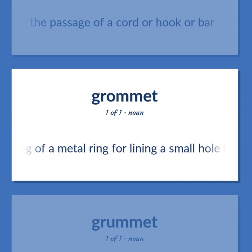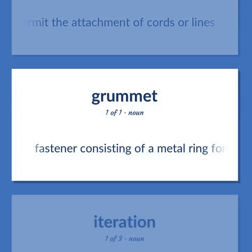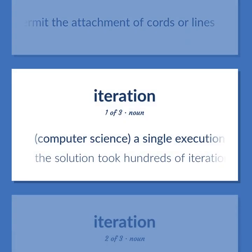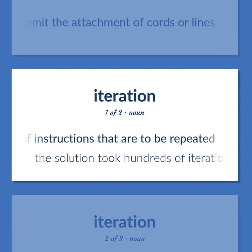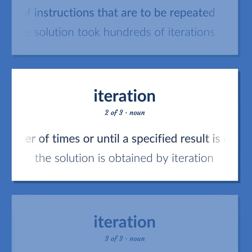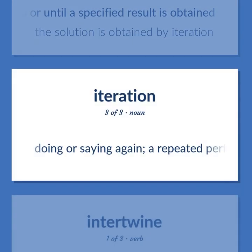ITERATION — Computer Science: A single execution of a set of instructions that are to be repeated — 'The solution took hundreds of iterations.' Computer Science: Executing the same set of instructions a given number of times or until a specified result is obtained — 'The solution is obtained by iteration.' Doing or saying again; a repeated performance.